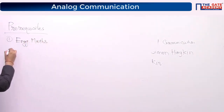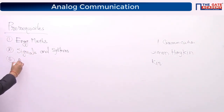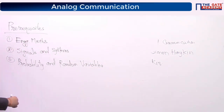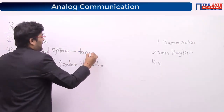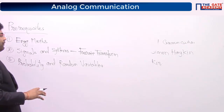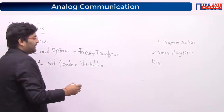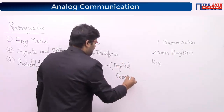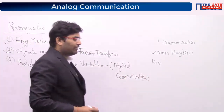My idea is to work on these basic subjects if you're weak. The three prerequisites I want you to focus on are: engineering mathematics, signals and systems, and probability and random variables. If you're weak in signals and systems, start working on it — you can always build from there. I'll also cover the necessary fundamentals within this course.